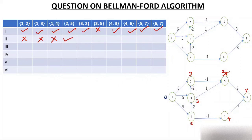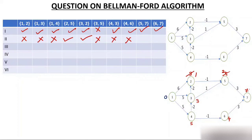Edge 3-2: node 3 is 3, edge weight -2, so 3 plus -2 is 1. Is 1 less than 3? Yes — node 2 becomes 1. Edge 3-5: 3 plus 1 is 4, not less than 2, no relax. Edge 4-3: 5 plus -2 is 3, already 3, no relax. Edge 4-6: 5 plus -1 is 4, already 4, no relax. Edge 5-7: 2 plus 3 is 5, less than 7 — node 7 becomes 5. Edge 6-7: 4 plus 3 is 7, not less than 5, no relax.